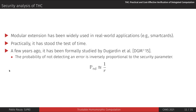What about the security level provided by THC? Since we are not introducing a new cryptographic construction, we benefit from years of actual usage in real-world applications. The fact that the modular extension scheme has stood the test of time is in itself a convincing argument for its security. But it is still important to know the exact level of security we can expect. It has already been studied formally — in the case of elliptic curve cryptography in particular — and the result is that the probability of not detecting a corruption is inversely proportional to the security parameter R.